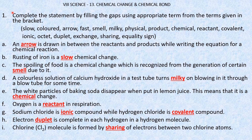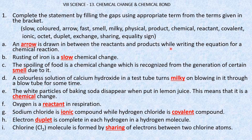First question: complete the statement by filling the gaps using appropriate terms from the bracket. A dash is drawn in between the reactants and products while writing the equation for a chemical reaction. In a chemical reaction, we draw an arrow between the reactants and products.